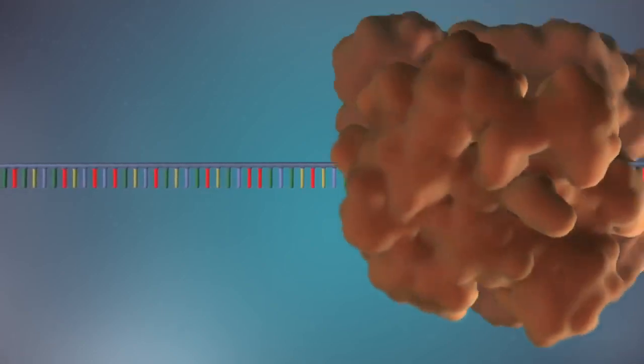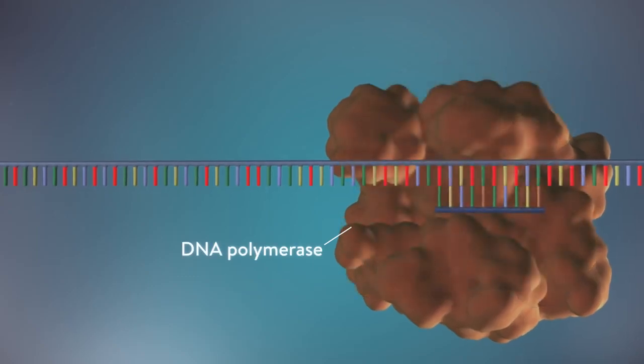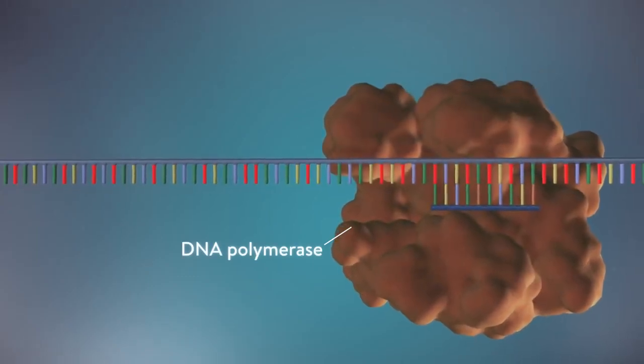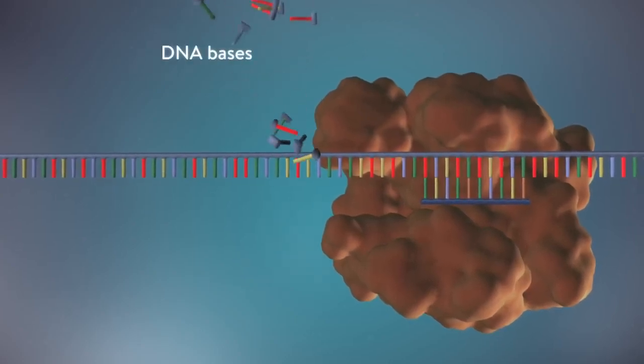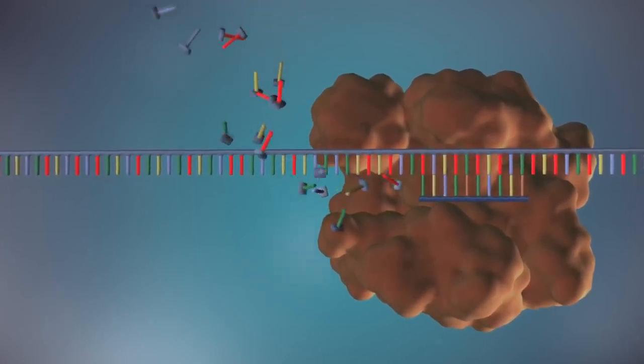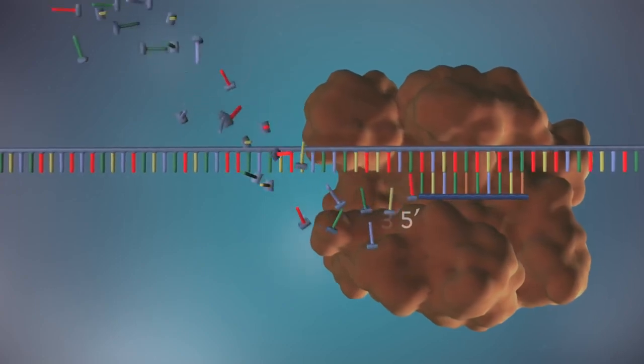An enzyme called DNA polymerase binds to the primer and will make the new strand of DNA. DNA polymerase can only add DNA bases in one direction, from the 5' end to the 3' end.